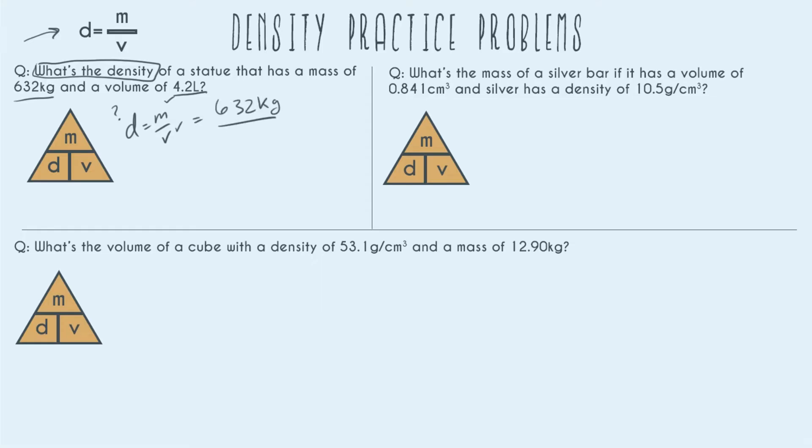our volume on the bottom and going ahead and solving we get to 150.48 before units and sig figs. Looking at our sig figs we have 3 for 632 and 2 for 4.2 so we're going to end up with 2 sig figs which rounds to 150 with no decimal point and so the units are going to be kg per liter.